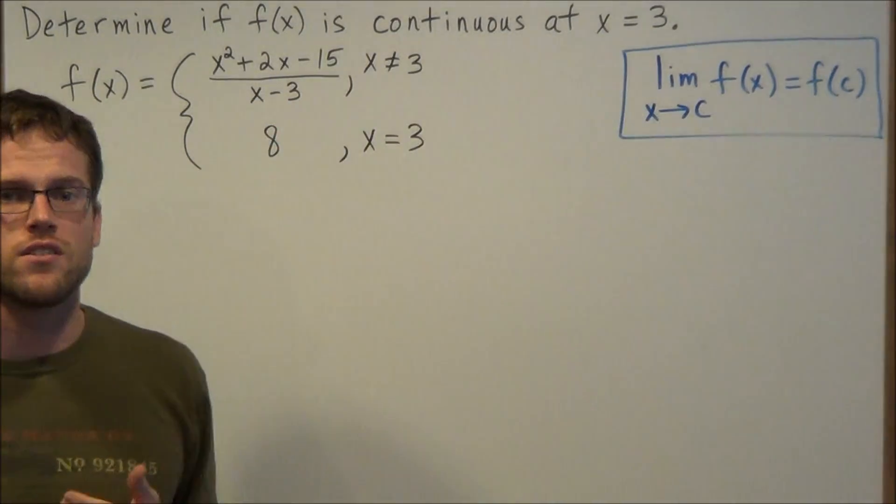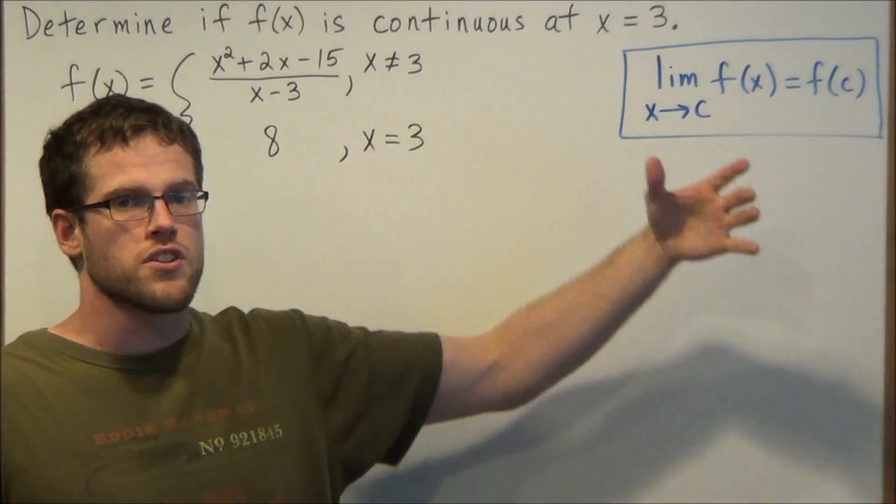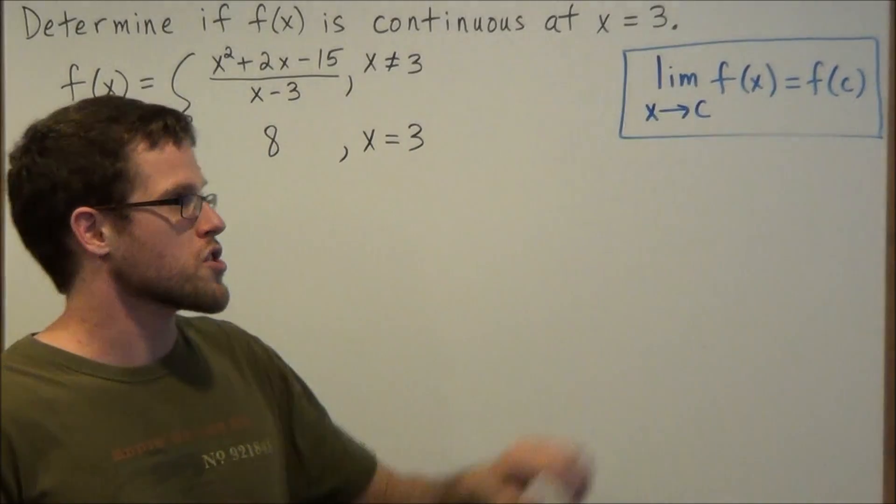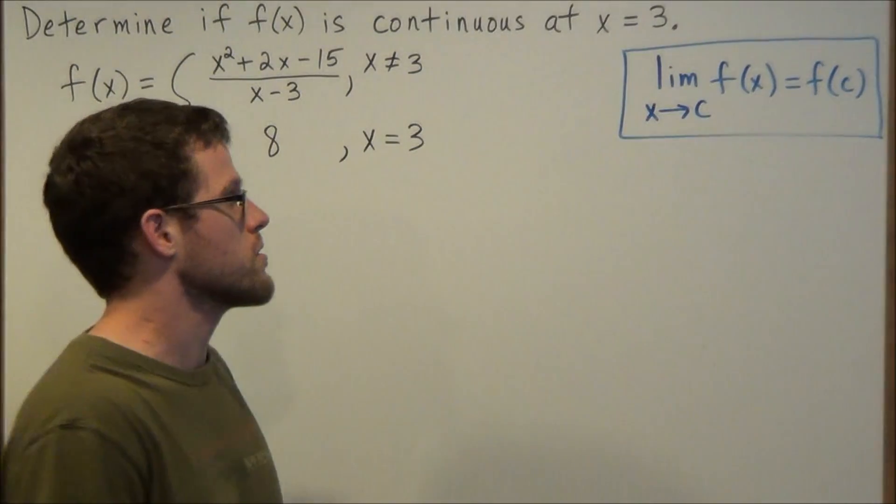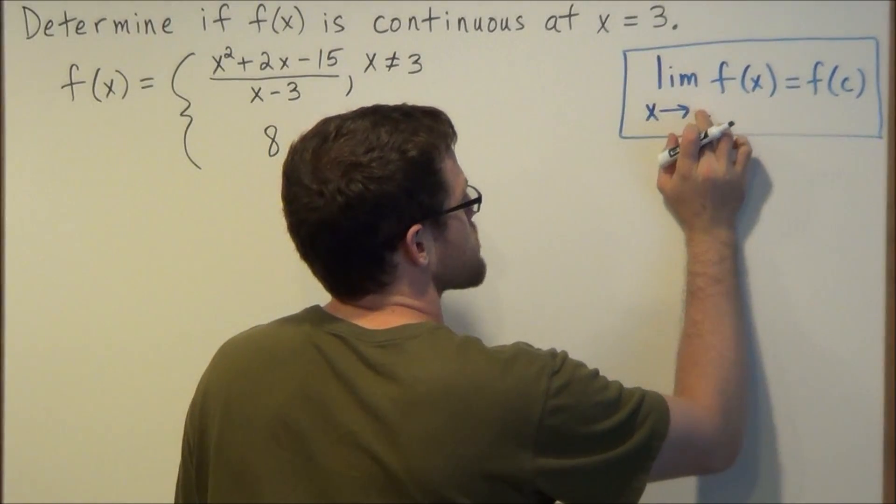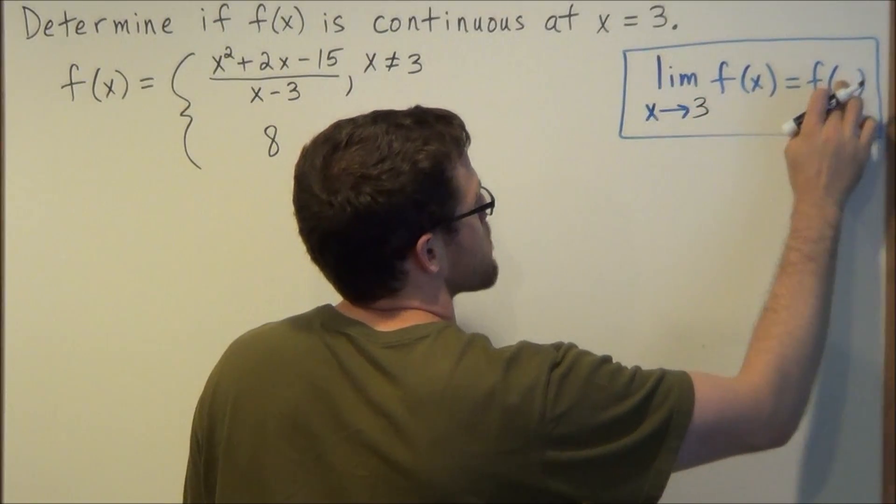So to show that f of x is continuous at x equals 3, we're just going to use the basic definition for continuity. We want to show that the limit is equal to the function value. So basically here, instead of x approaching c, we're going to replace c with 3 for this particular problem.